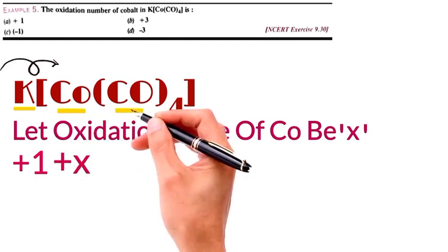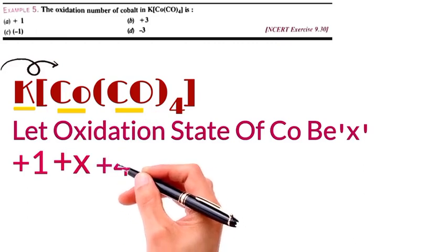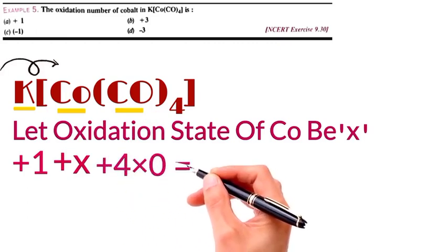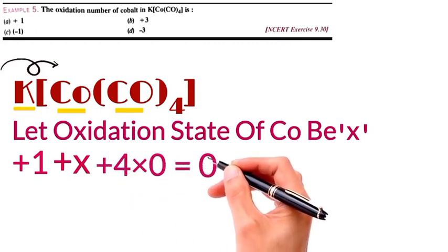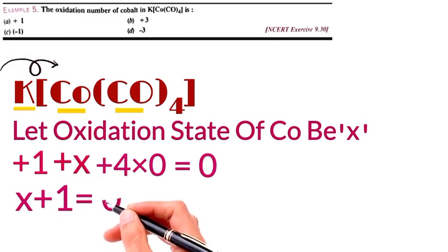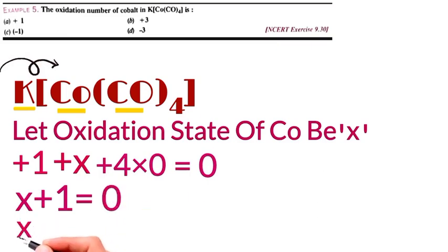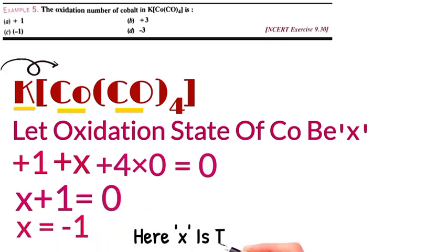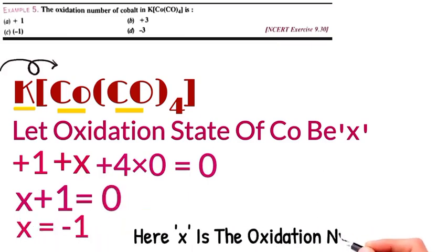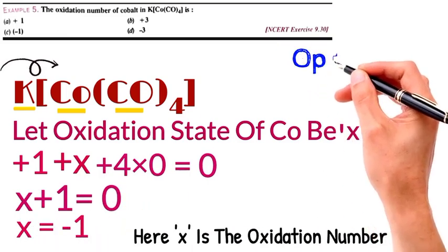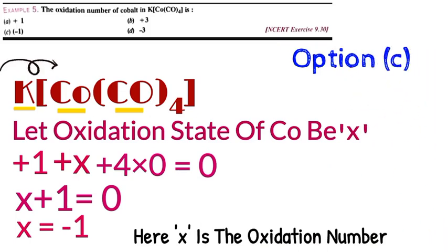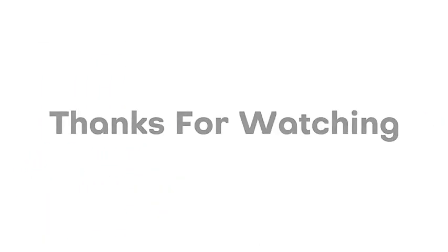We have x plus 4 times 0, which equals 0, because there is no charge on the bracket — meaning the overall charge is 0. Therefore, the oxidation state of cobalt is 0.